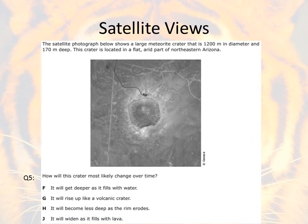Let's move on to satellite views. Here we've got an example of a STAAR question used in past years. On these questions, it very rarely will ever ask you to actually identify what you're looking at. You can use Google Maps to get pictures, but really it's our job to think about weathering and erosion and what things might look like in the future — so it's probably going to be a short story problem.